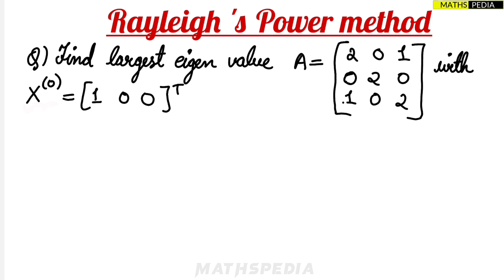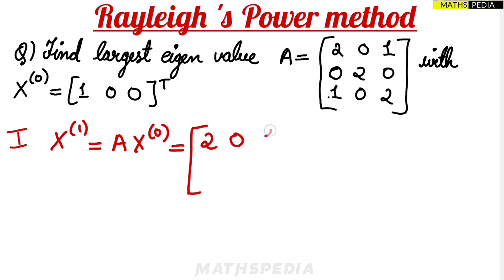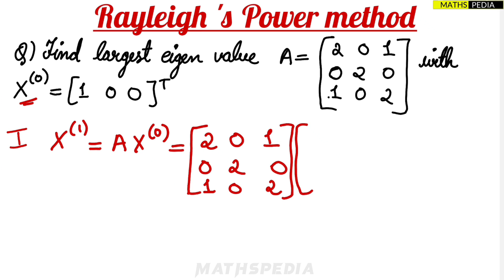The initial approximation for the first iteration is x^0, which is given as [1, 0, 0] transpose — meaning we write it as a column vector: 1, 0, 0. The A matrix given is a 3x3 matrix with values 2, 0, 1 in the first row, 0, 2, 0 in the second, and so on.